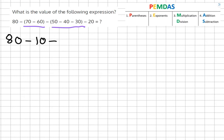Now 50 minus 40 equals 10 minus 30 gives us minus 20. And then minus 20 equals.